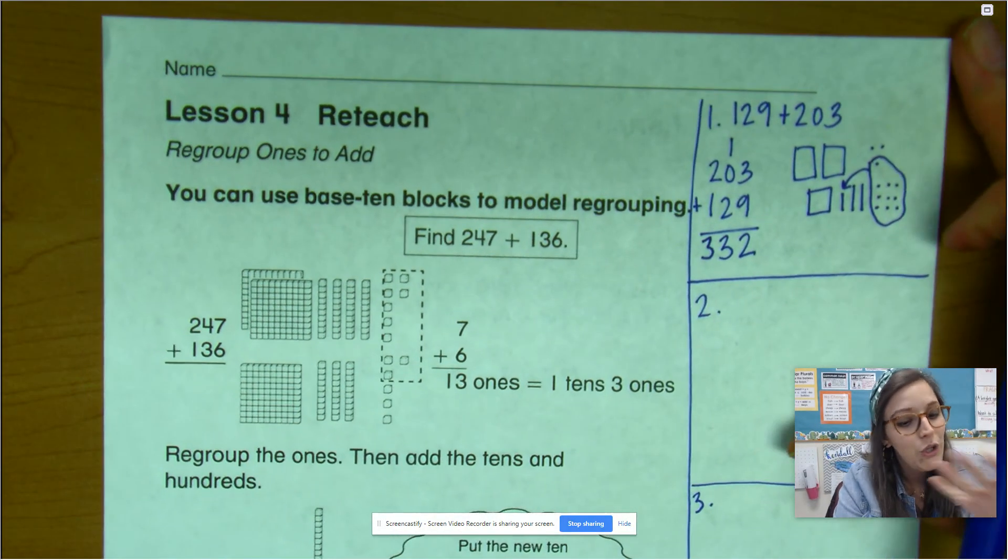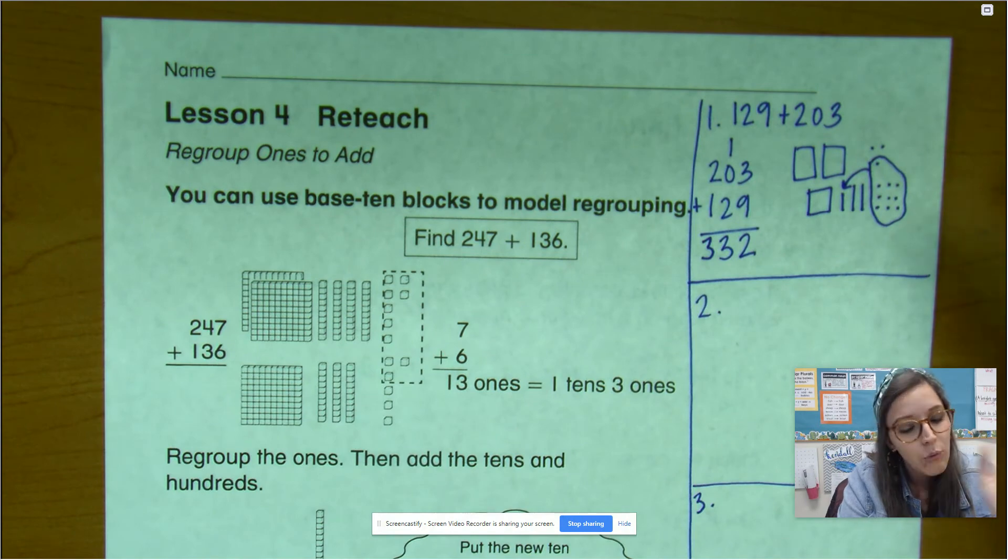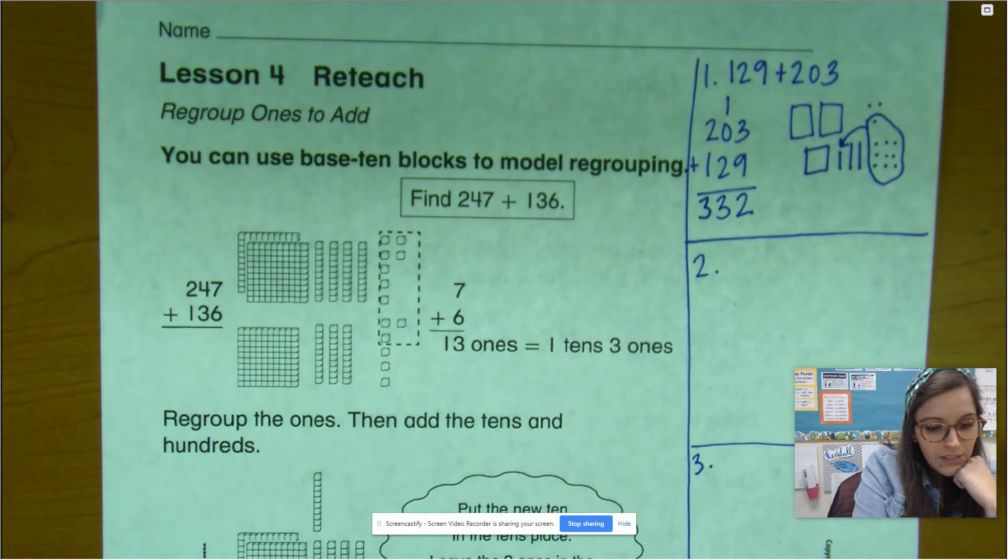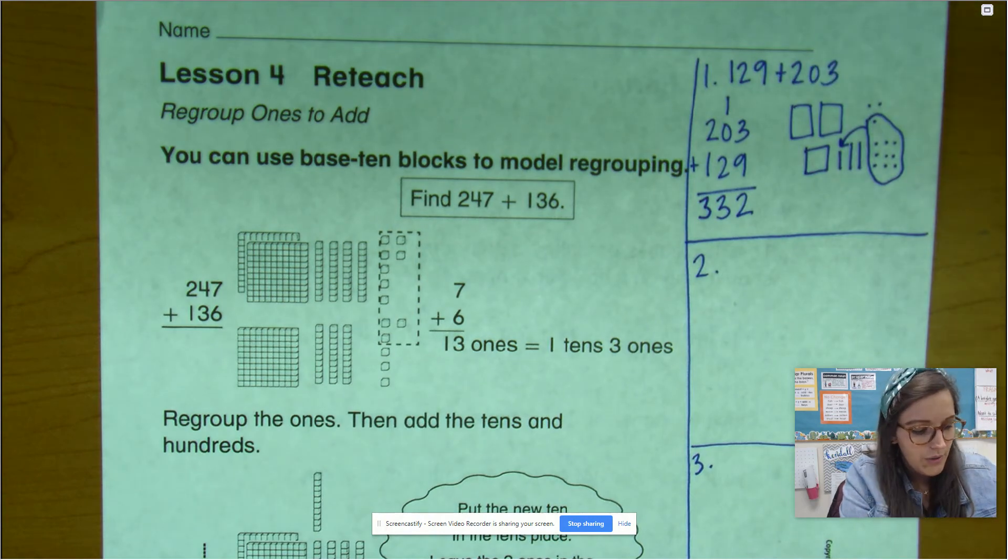Look what you just did. You just added three-digit numbers. Crazy. Amazing. All right, let's try another one. Sorry, you're kind of having to write a little bit small. So make sure you're doing that.